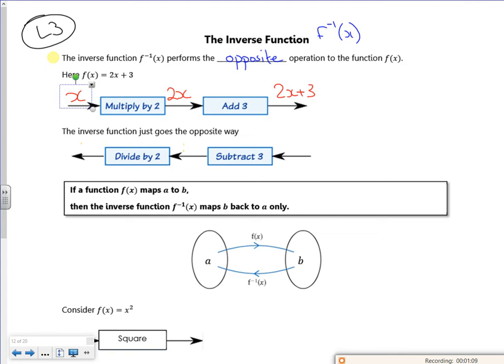Now the inverse goes backwards and it's what I need to do to get back. So I'm starting at 2x plus 3 and I'm getting back. So it's kind of like a rearrange really. So subtract 3, and then I'm going to divide it by 2. So that's the operations I need to get back.